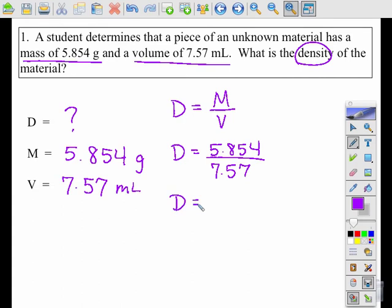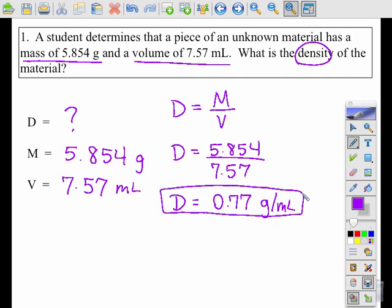So 5.854 divided by 7.57, then I'm going to plug into my calculator and solve, rounding to two decimal places. So in this case, my answer should be 0.77, and my unit for density is grams per milliliter.